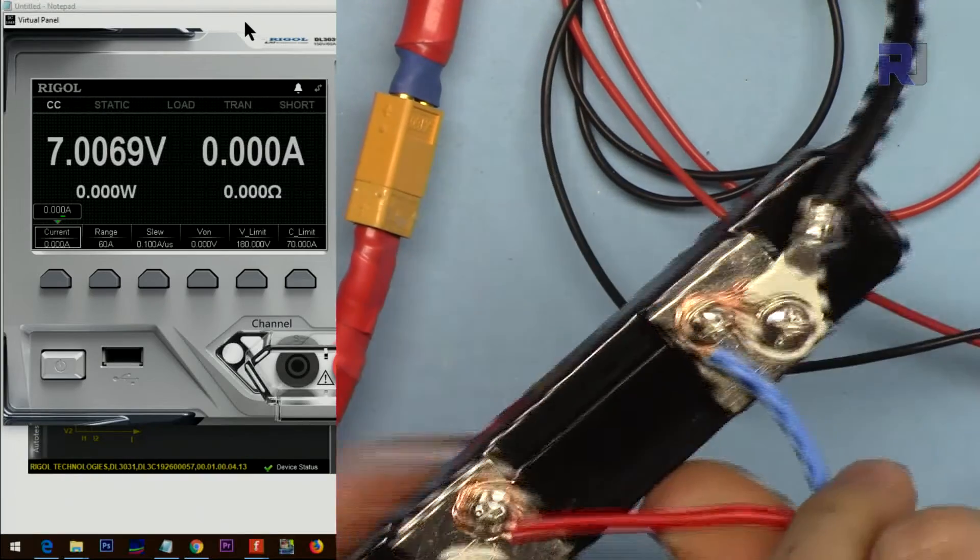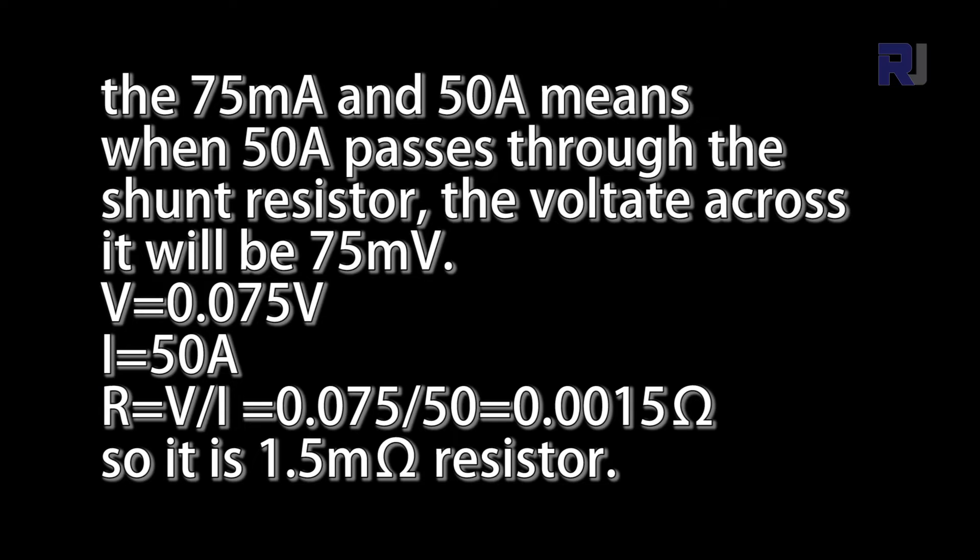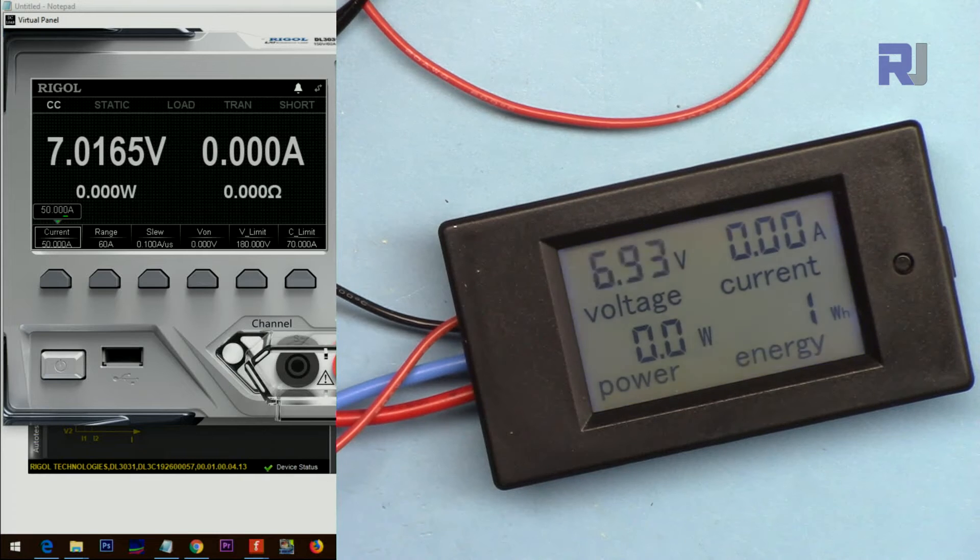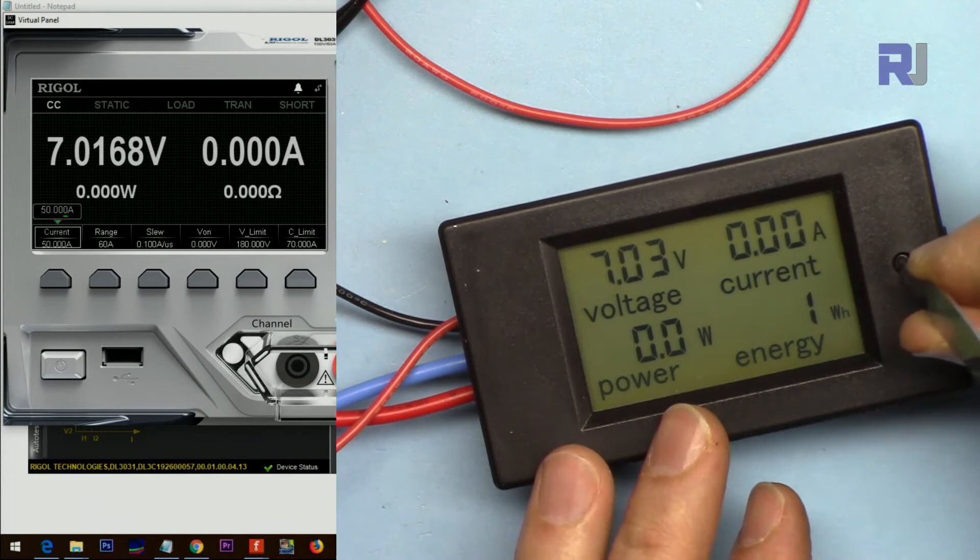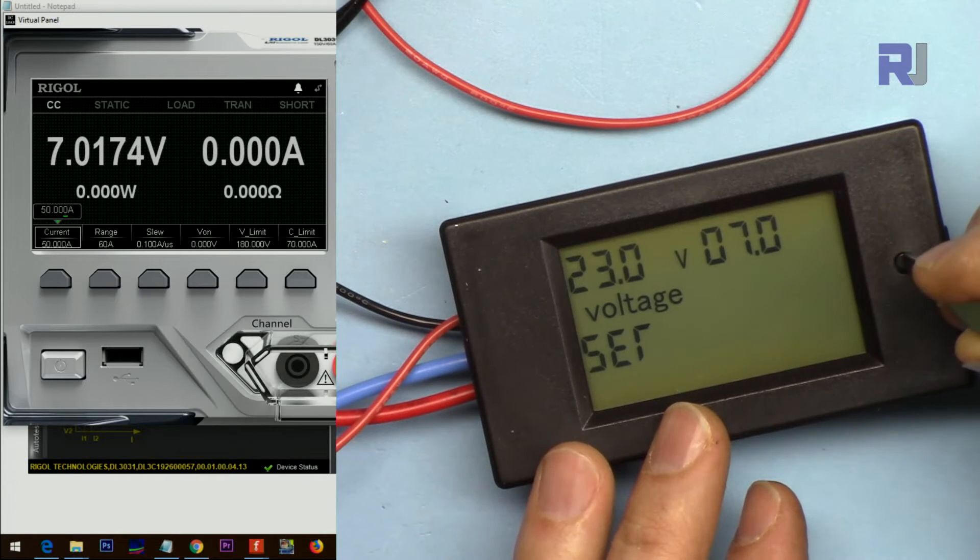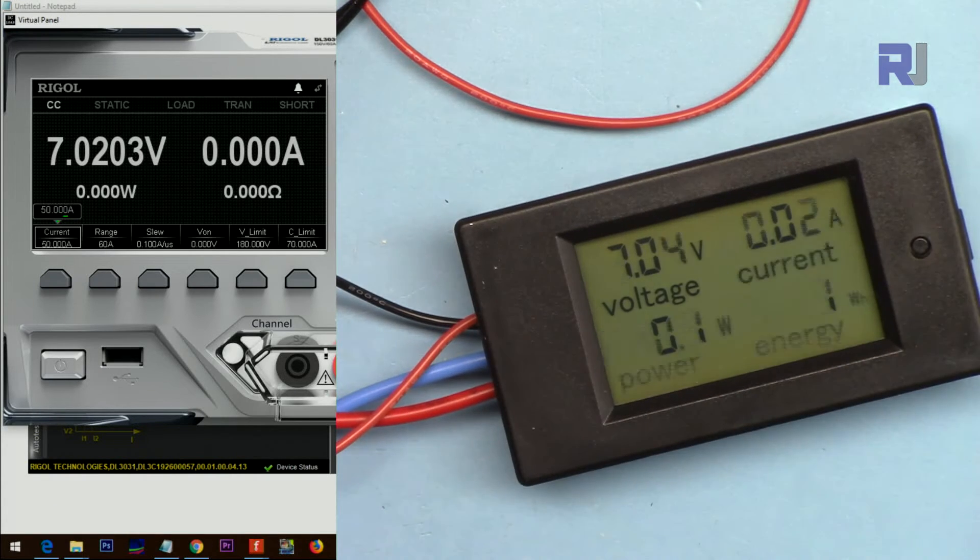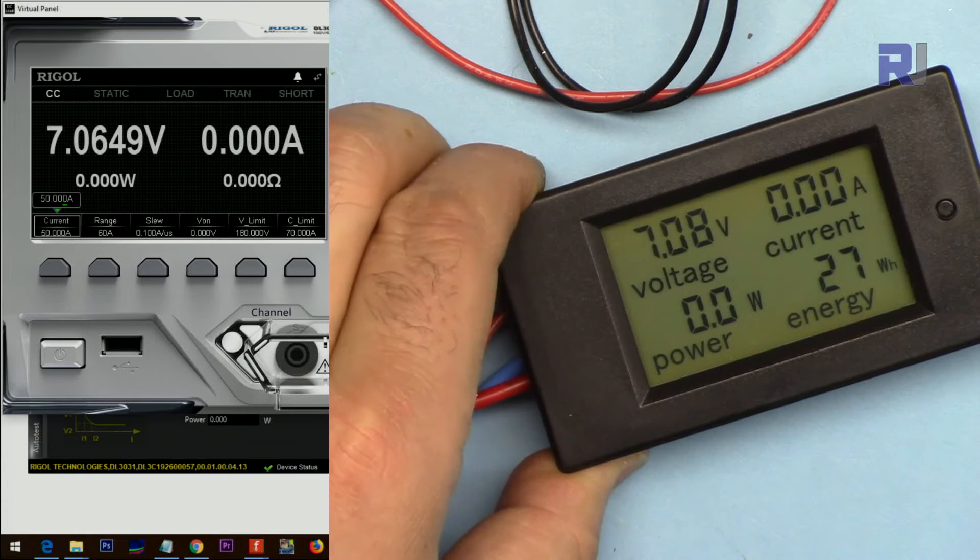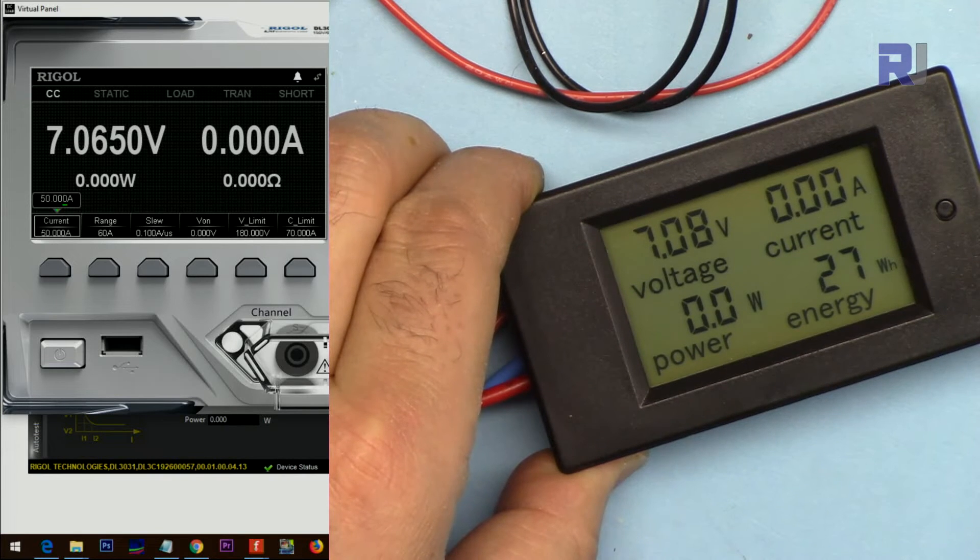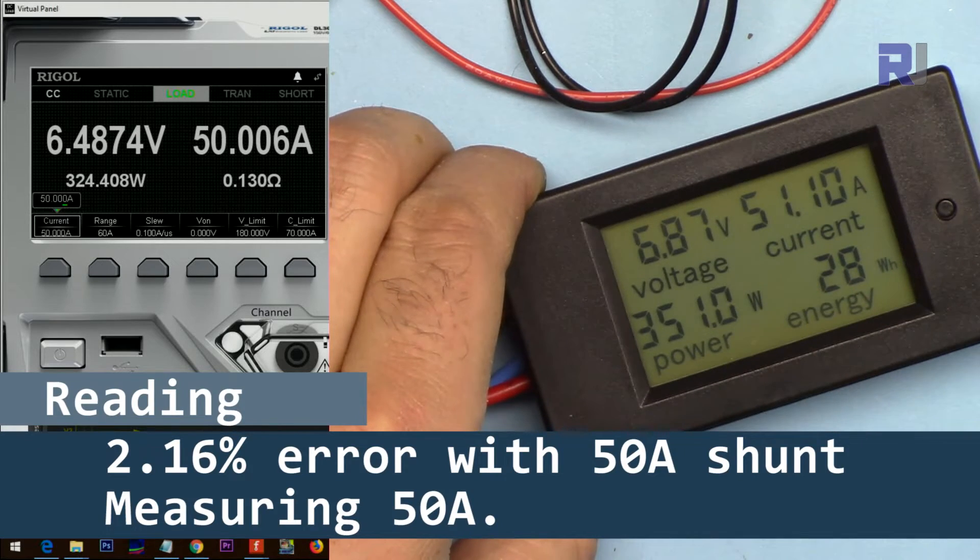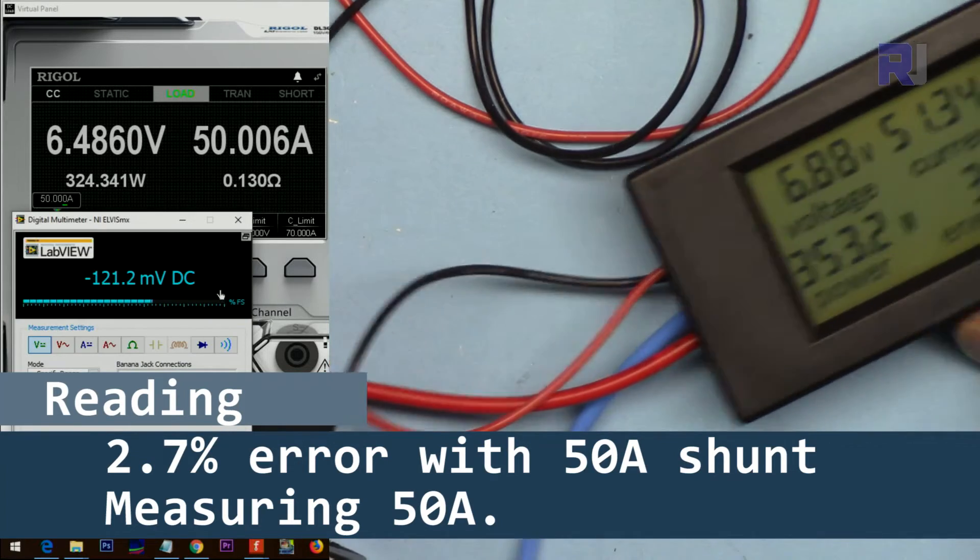Now I have connected the 50 ampere shunt, 75 millivolts, and I've set the voltage. The voltage is below the value and it is now blinking. Now let's test it with 50 ampere shunt and 50 ampere current.